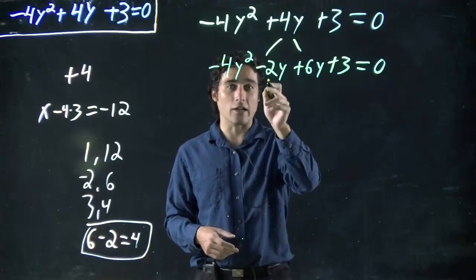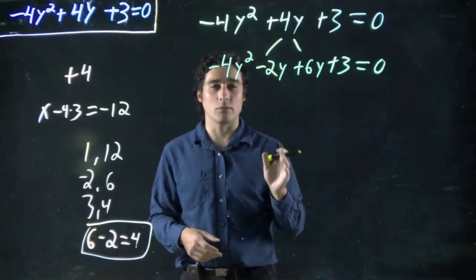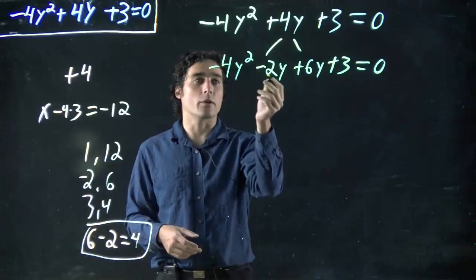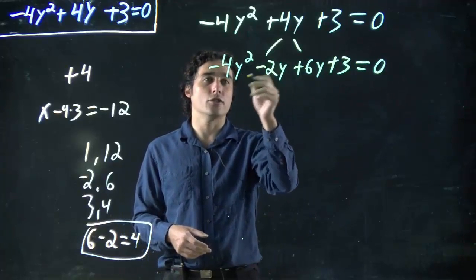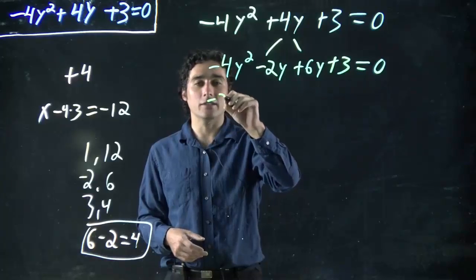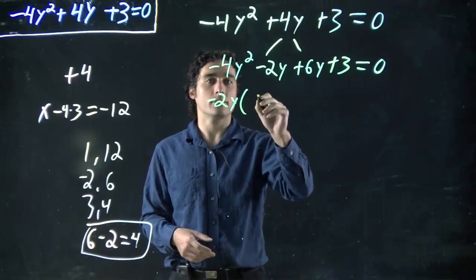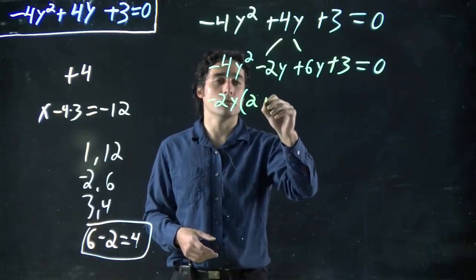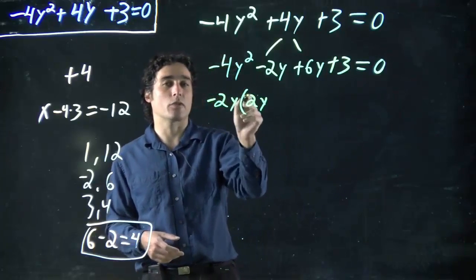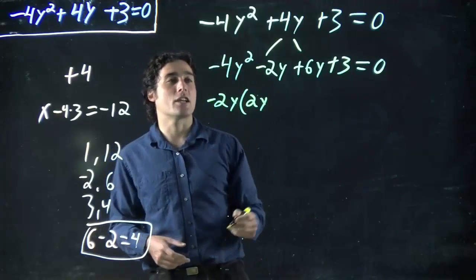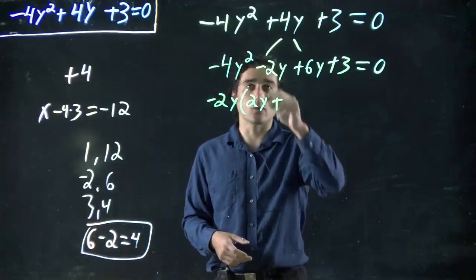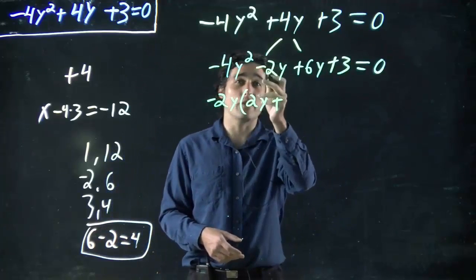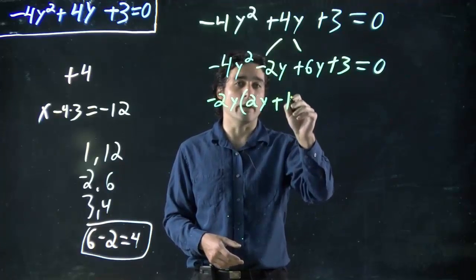Now, common factor the first two, common factor the second two, and we should be in business. What do we got in common? A -2 and a y. So -2y. Divide this by -2y, what do we get? 2y. Remember, the minus, when we're factoring out a minus, everything changes sign. So we can guess this will be a plus, and actually when we divide -2y by -2y, what do we get? 1.